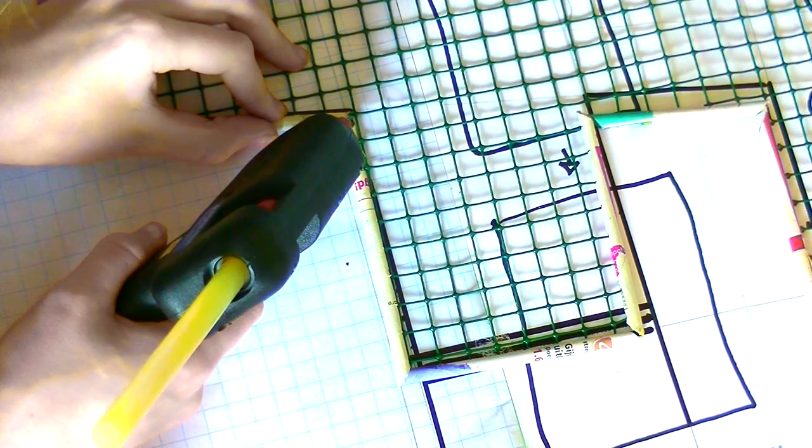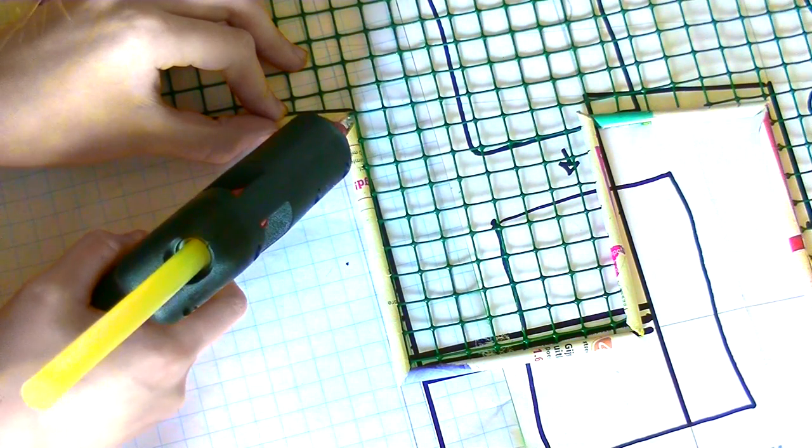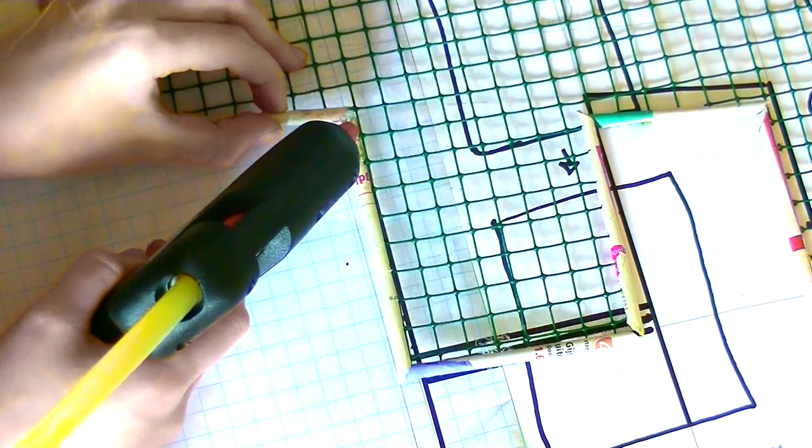When you're done with putting all the magazines to the edges you can glue the corners with a hot glue gun.